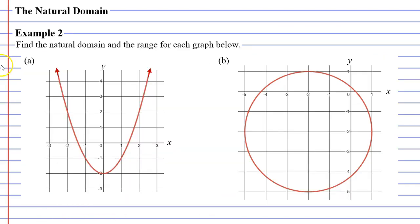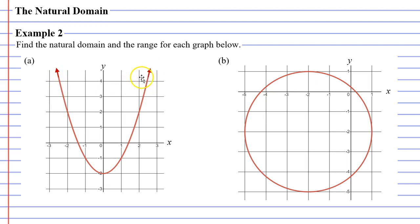Let's get into the example now. In example two, we are asked to find the natural domain and the range for each graph below. Looking at question A, you may notice that we haven't imposed any restrictions on the domain. We can tell because there are arrows at each end of the parabola, hence why we are finding the natural domain — it's the domain that occurs naturally.